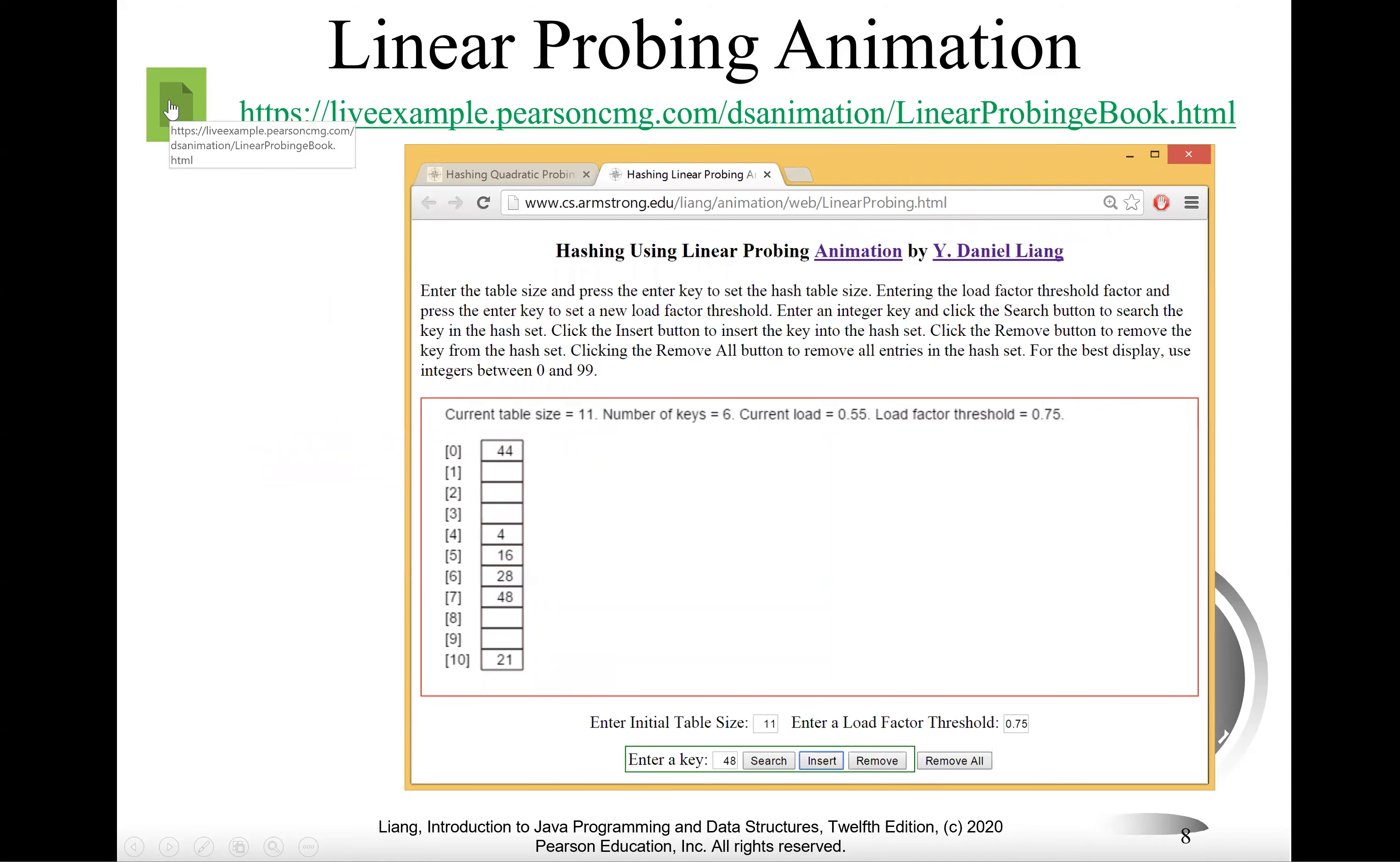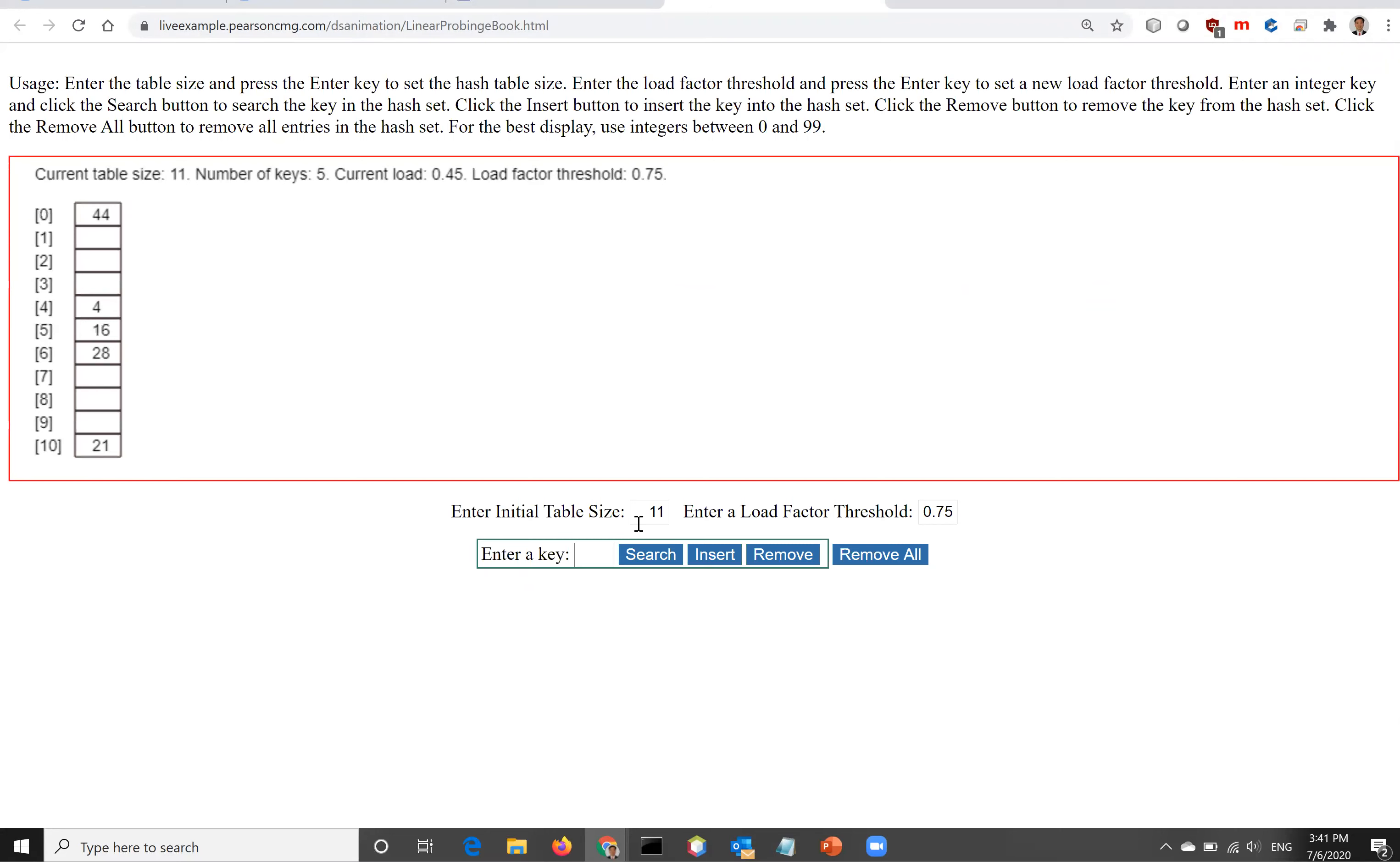Let's look at this animation for linear probing. We're going to insert 26. I'll put this search key in. Let me correct the table size back to 11. Put the key right here, 26. Now 26 is here.